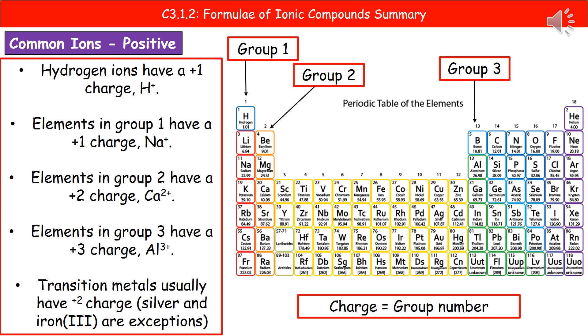If we consider the transition metals, which we find in that section between group two and group three, transition metals usually have a plus two charge. Two exceptions to bear in mind are silver and iron three.